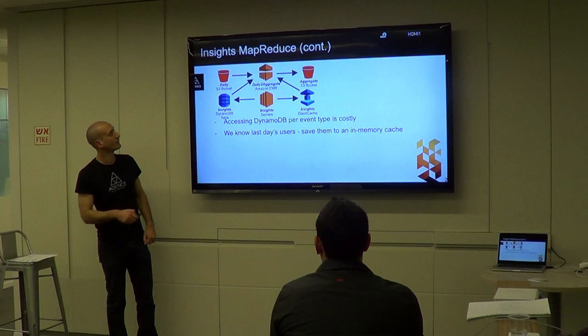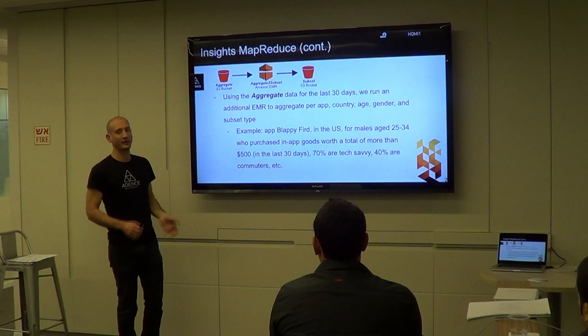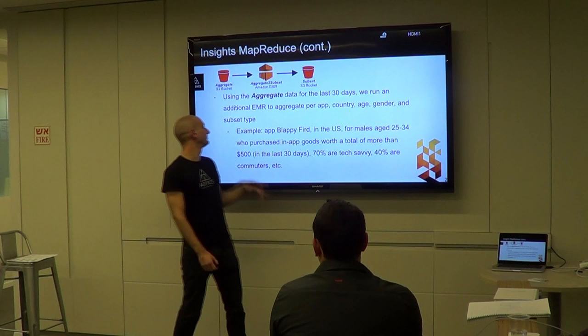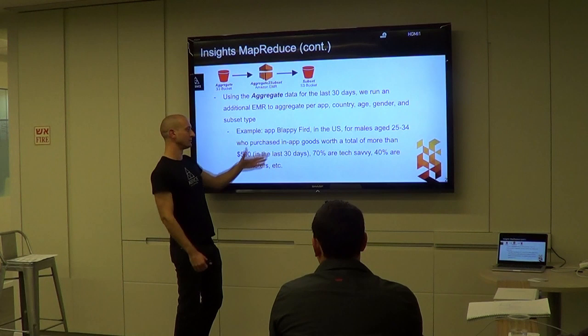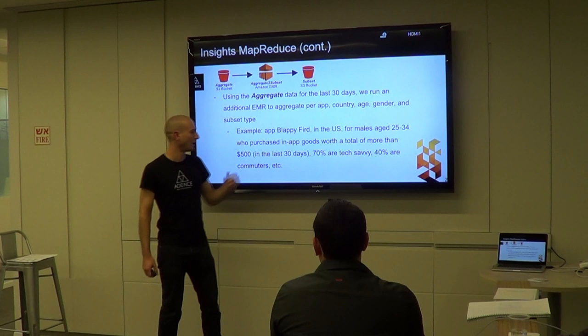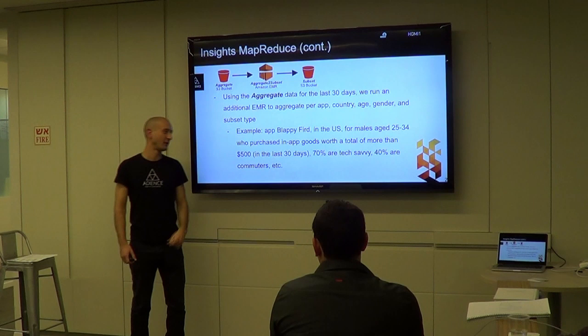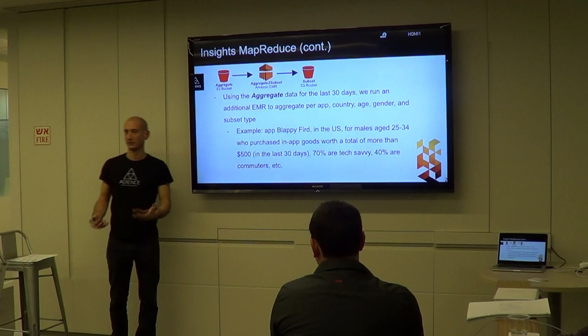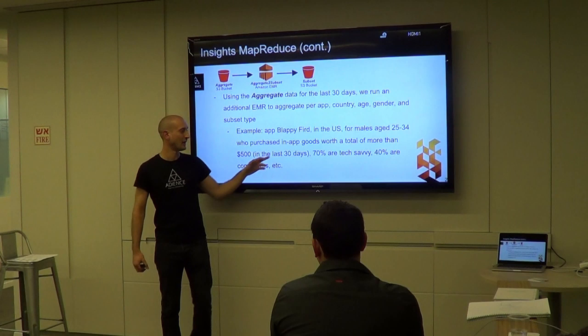For the last part of our MapReduce, we take the aggregate data and generate subsets. Our output is an aggregation by country, age, gender, and subset type. For example, a result record says: in application Platyford, in the US, for males aged 25-34 who purchased in-app goods worth more than $500 in the last 30 days - 70% are tech-savvy, 40% are commuters.